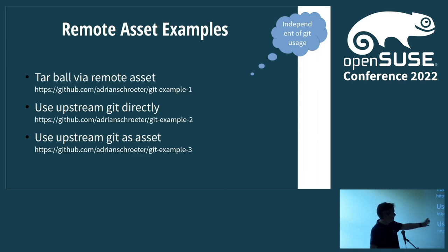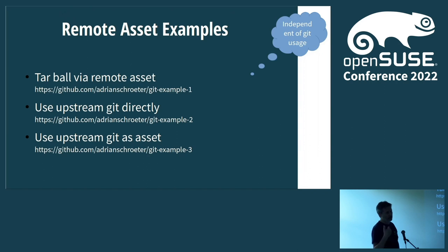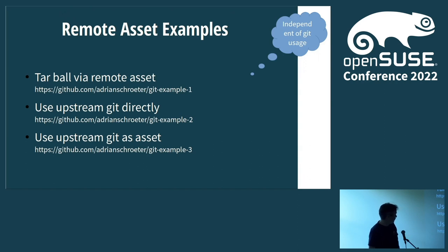There are basically three examples of how such a package could look: one is a classic spec file and tarball downloaded via a remote asset; one could have a remote Git directory as a sub-directory; or if you own your code anyway, you may work in-place inside the Git. I won't go into details — it's more for looking into.